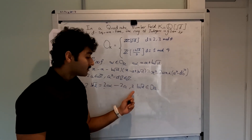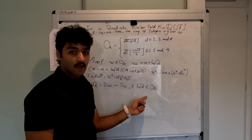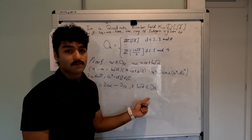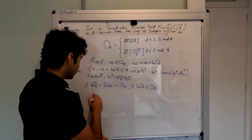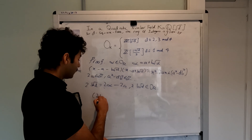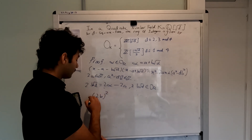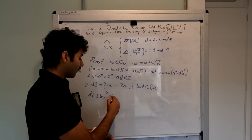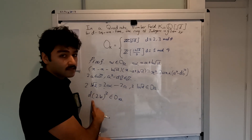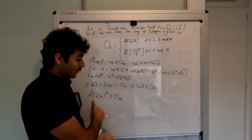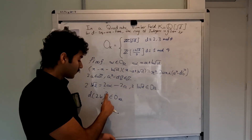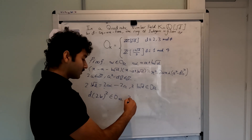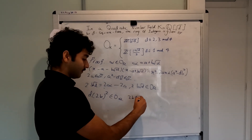Now since 2b√d is in O_k and the set of algebraic integers forms a ring, its square — that is, 4b²d — is also an algebraic integer. Now since d is square-free and 4b²d is an algebraic integer, it follows that 2b must also be an integer.